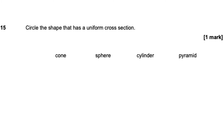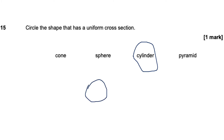Question 15: circle the shape that has a uniform cross-section. What this means is when I chop it at any point, it gives me the same cross-section. A cylinder is the answer, because wherever I chop it, the cross-section is always going to be a circle.